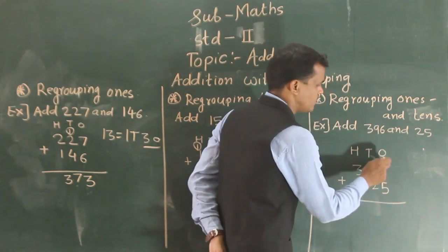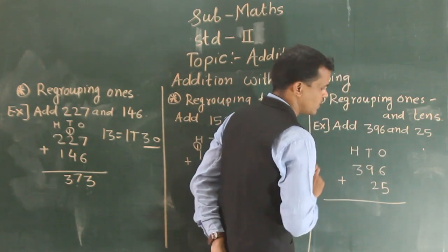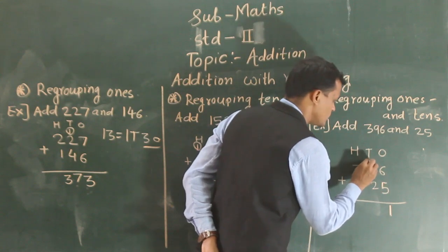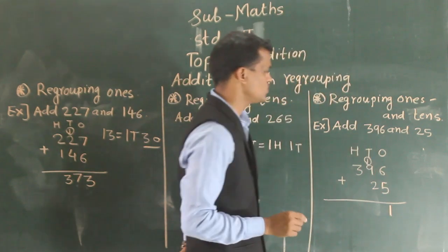11 means, 11 ones means, 1 ten and 1 ones. So 1 right here and 1 carry to the tens place.